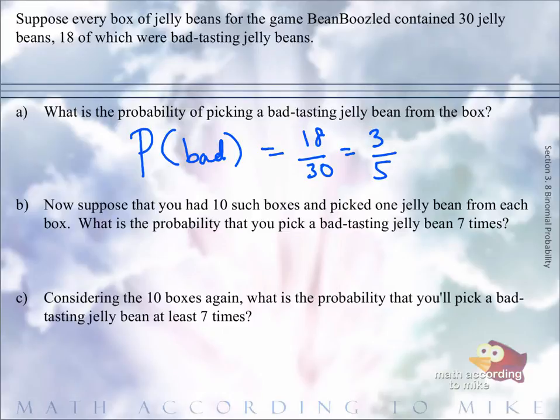Well, let's talk about why this now is binomial. You're doing it more than once, you're picking from 10 boxes. The probability doesn't change. We're assuming that the boxes are exactly the same, which means from each box you have a three-fifths chance of picking a bad jelly bean. That also goes along with the probability doesn't change, because again, we're assuming the boxes are the same. And just because you pick a bad bean in one box does not affect any other box. So we have independence. So this is a binomial.